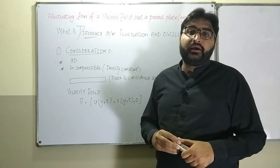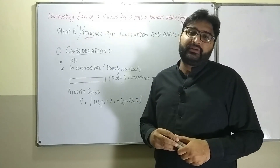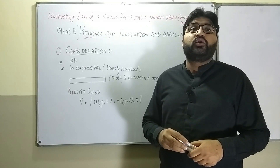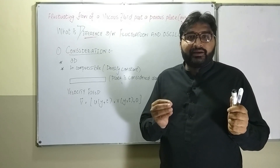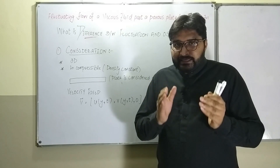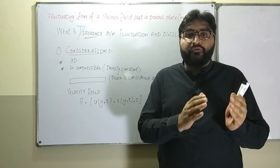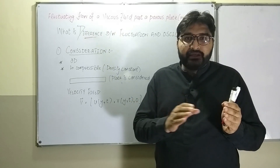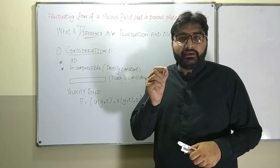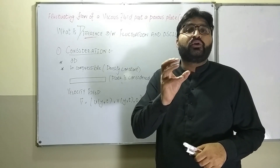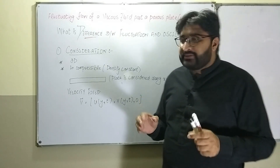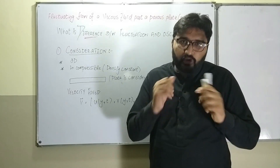سب سے پہلے ہمیں یہ سمجھنا پڑے گا کہ fluctuation اور oscillation میں کیا difference ہوتا ہے۔ Fluctuation ہوتی ہے to and fro motion of a body about a certain position in an irregular way — یعنی کسی body کا ایک خاص position کے about to and fro move کرنا مگر irregular way میں، جس میں amplitude پر فرق آ جائے، تو یہ fluctuation ہوتی ہے۔ جبکہ oscillation کیا ہوتی ہے — کسی بھی body کا ایک خاص position کے about move کرنا with constant amplitude — اس کو ہم oscillation کہتے ہیں۔